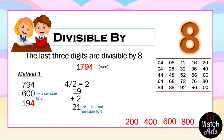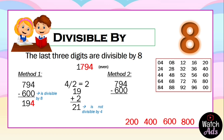For our second method, we again take the last three digits and check our magic numbers. It's still 600: 794 minus 600 equals 194, since 600 is divisible by 8.